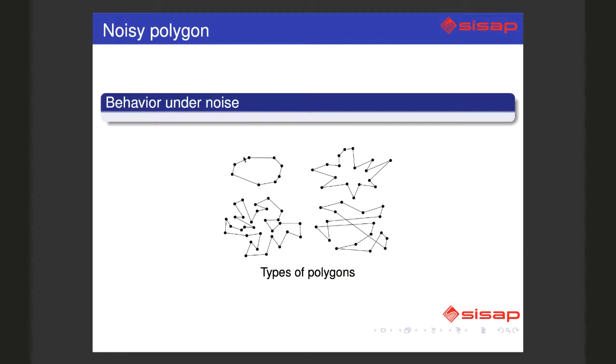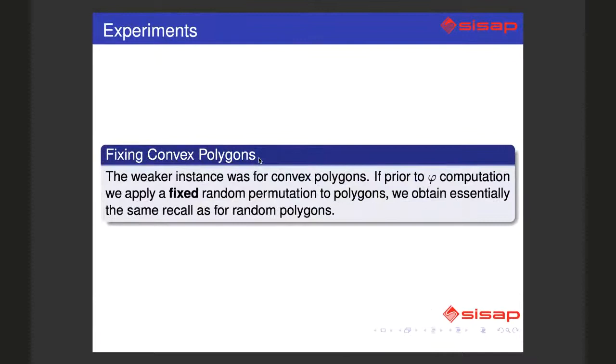So the problem is again that the polygons are given. What happens if the particular problem gives me a convex polygon?